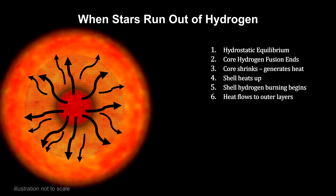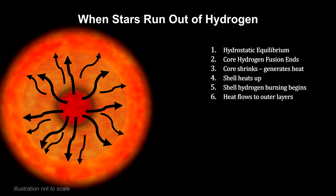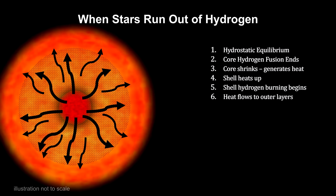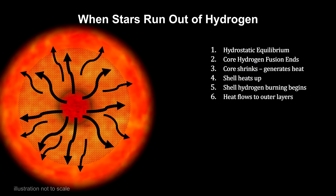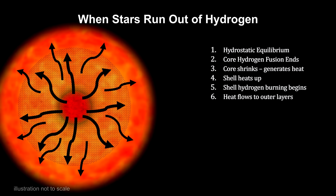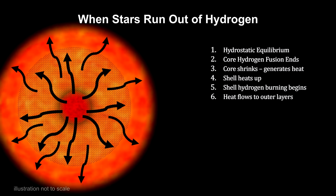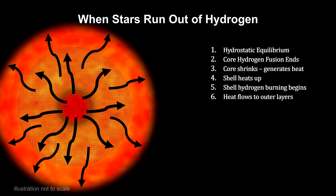The helium core continues to contract, producing more heat all around it. This leads to more fusion in additional shells of fresh hydrogen outside the core. The additional fusion produces still more energy, which also flows out into the upper layers of the star.